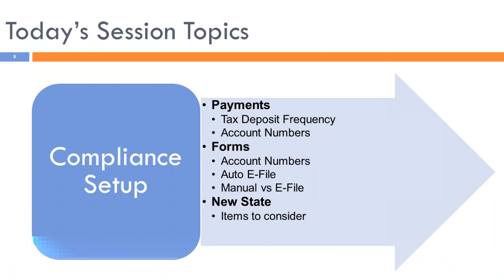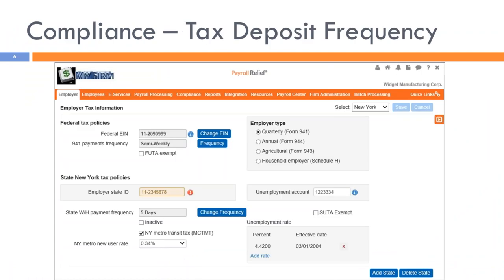Our first topic is compliance setup — setting up payments, forms, and what to consider when adding a new state. This is the employer tax information screen. Tax payments are scheduled based on the employer's tax deposit frequency issued by the taxing authority. It is imperative that this is set up correctly from the very beginning and evaluated year after year. Many employers have been penalized for not using the proper tax deposit frequency. Another critical area is using proper account ID numbers.